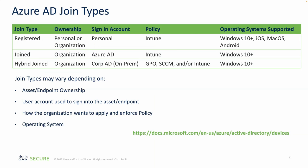Moving on to join types in Azure AD. The first type is 'Registered' — device ownership can be personal or organizational. The sign-in account used to register is a personal account, and policy is managed by Intune solely. Operating systems supported include minimum Windows 10, iOS, macOS, and Android — multiple different operating systems for the registered type.